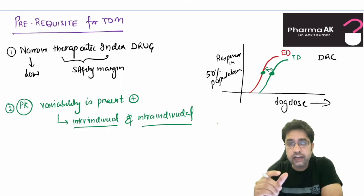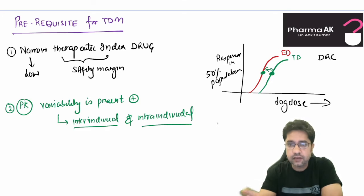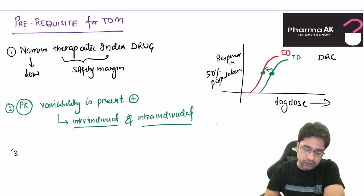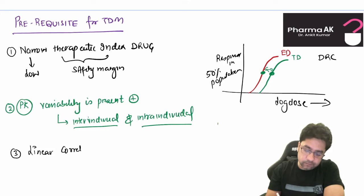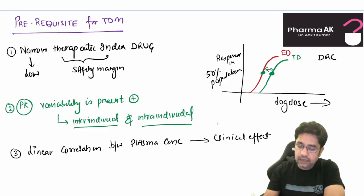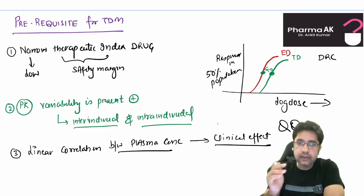This variability can also be intra-individual — within the same individual. It could be because of diseases, drug interactions, food interactions, the timing when the patient is taking a drug — before food, after food, morning time, night time. All these things can lead to variability. The third prerequisite is that there must be a linear correlation between plasma concentration of a drug and its clinical effect. This is the main assumption and prerequisite of doing TDM.